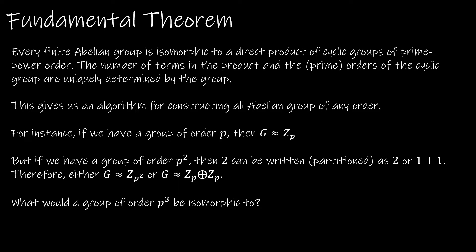For instance, if you have a group of order P, where P is obviously prime, we already know that group is going to be isomorphic to Z sub P. But if you have a group of order P squared, we can think of the exponent two as either two, or as one plus one — we're thinking about how many ways we can partition two. Because we can partition it in two ways, we have two possible groups: it would be isomorphic to either Z sub P squared, or Z P cross Z P.